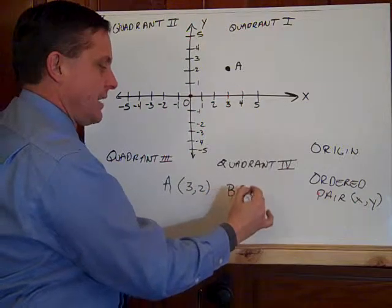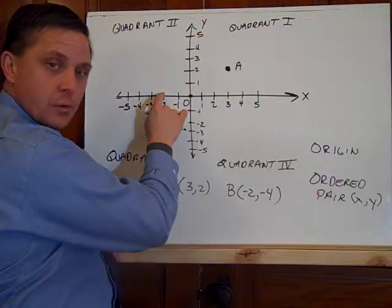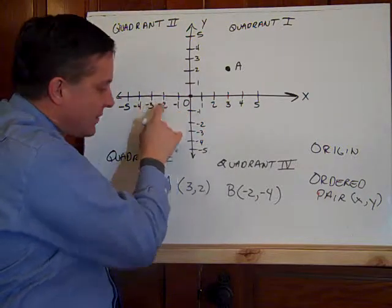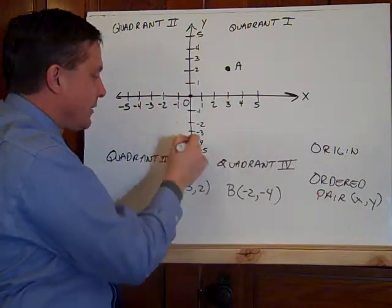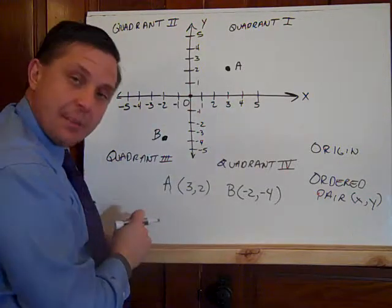Let's make point B negative two, negative four. I run to negative two. And how do I rise? I rise to down to go negative, negative four. And again, I can label it with the capital letter.